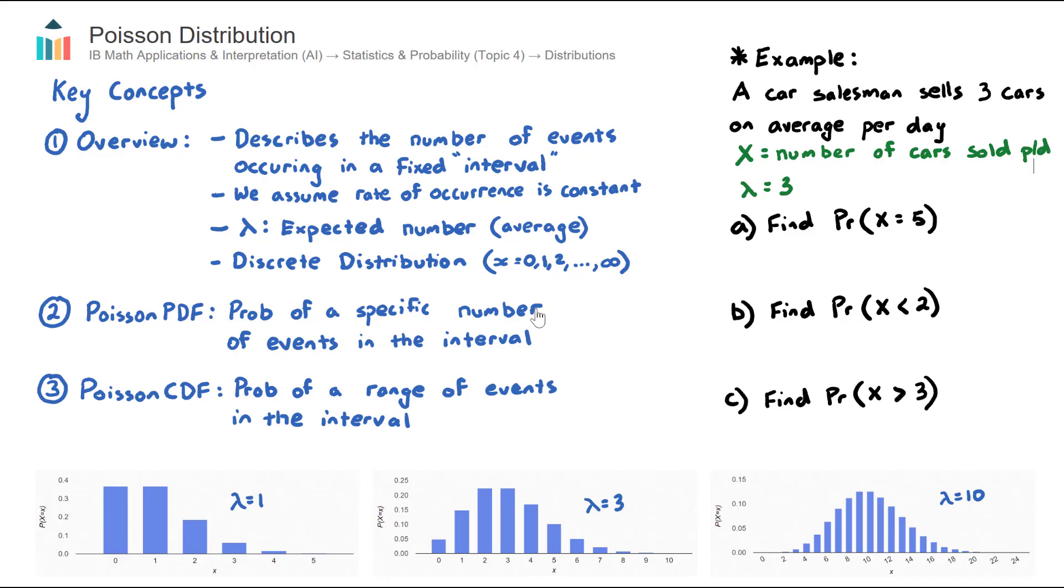For specific numbers, we're going to use the Poisson PDF command in our calculator. And for a range, we'll use the Poisson CDF command in our calculator.